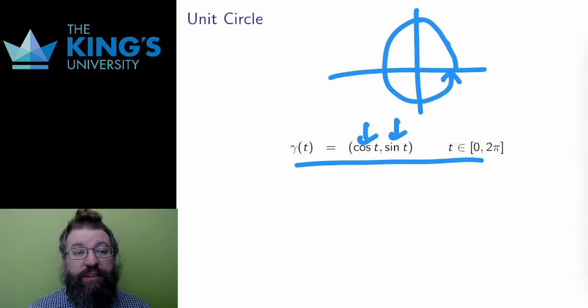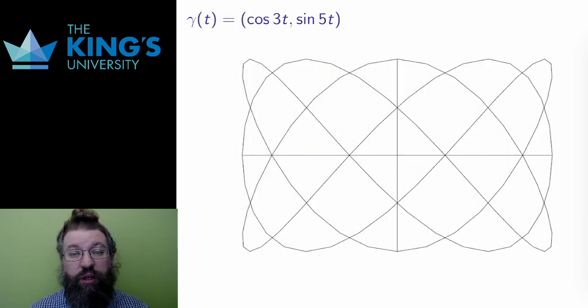The circle is an excellent basis for other parametric curves. By adjusting the circle, I can produce other periodic curves. This curve is the same as the circle, except there is a 3 inside the cosine, and a 5 inside the sine.